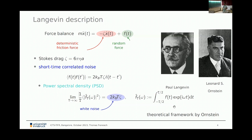Nowadays we call this white noise. You can decompose this force into Fourier components in a finite observation time and take the magnitude squared per observation time — the power spectral density. By the Wiener-Khinchin theorem, this is just the Fourier transform of the autocorrelation, which turns out to be frequency independent. That's why it's called white noise. These terms were invented only much later, I think in the 1940s, likely due to World War II and radio technology. At the time it was all completely new.